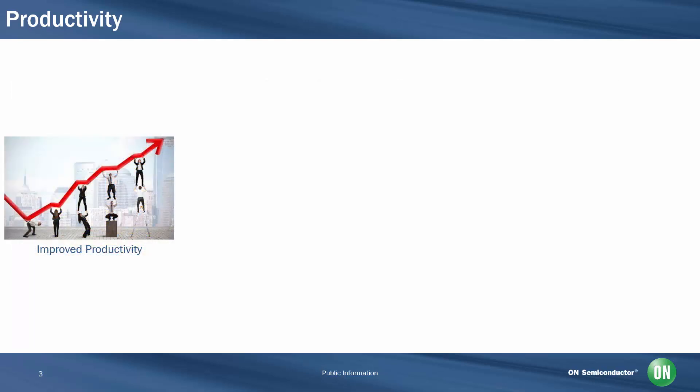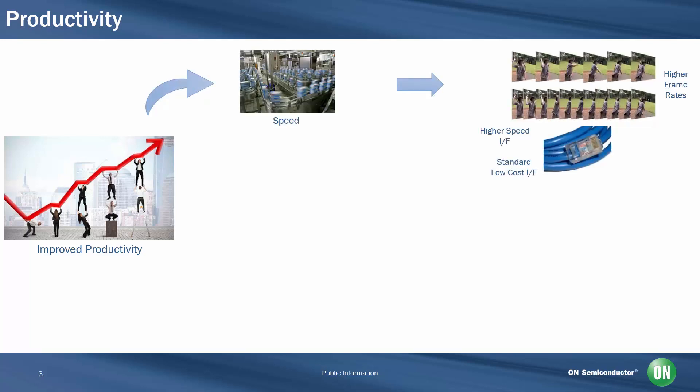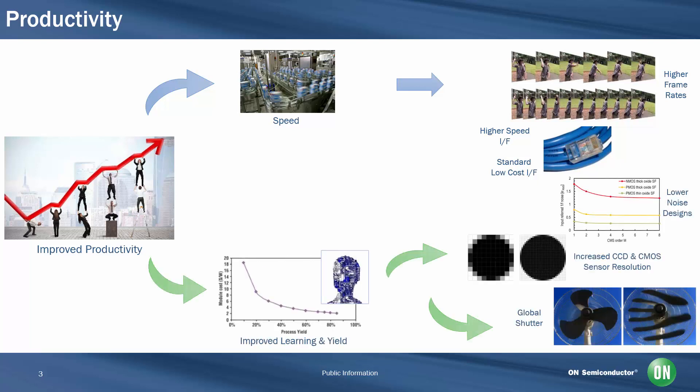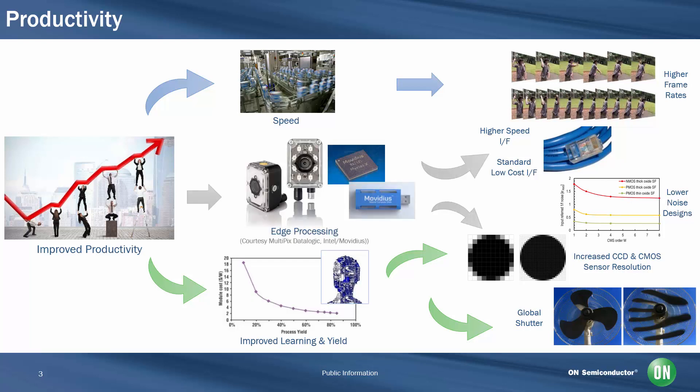This type of customization arises because productivity can mean different things in different applications. Sometimes productivity means speed — the need for faster frame rates and high-speed interfaces to provide accelerated movement of imaging data. In other applications, productivity may mean collecting more and better information about what is being imaged, providing higher resolution or lower noise to see into shadows, or improving global shutter performance to minimize artifacts when capturing moving objects. But often, the real need is for a unique combination of several of these factors, which can be further complicated by the desire to implement strategies such as edge processing as part of a deployed AI system.